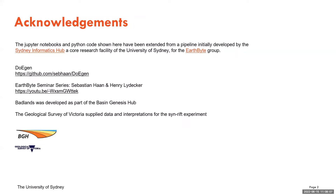A couple of acknowledgements: thanks to Sebastian Hahn and Henry Lydic who worked extensively on putting Doogen together at the Sydney Informatics Hub. Badlands was developed as part of the Basin Genesis Hub, which finished up a couple of years ago. A lot of the data for one of the experiments was supplied by the Geological Survey of Victoria as part of the Victorian Gas Program, which ran between 2017 and 2020. Thanks also to my supervisors, Tristan Sol and Sarah Moran.